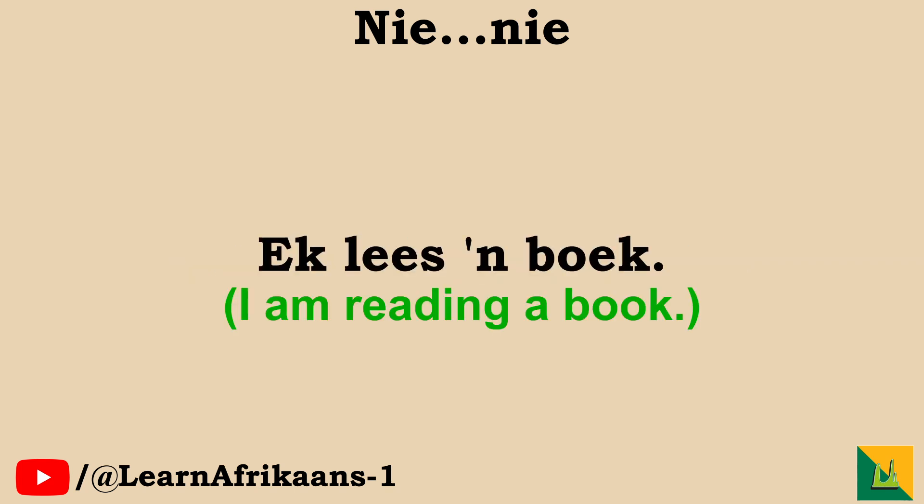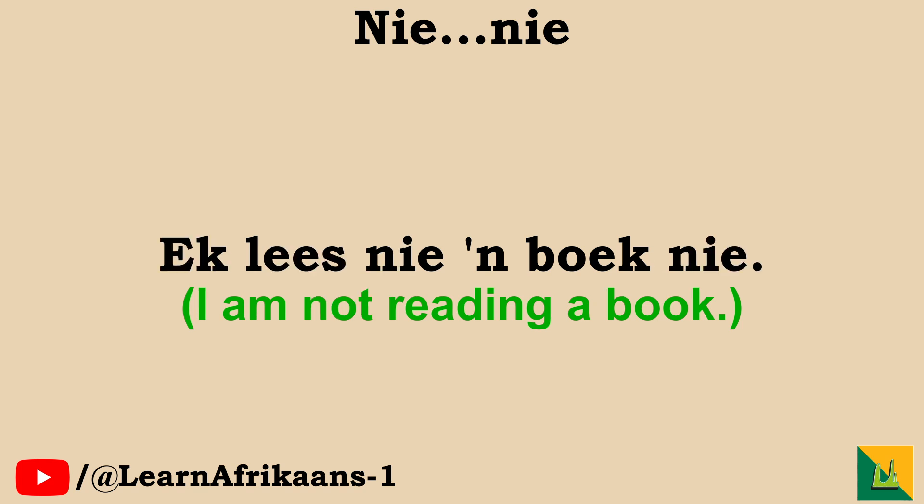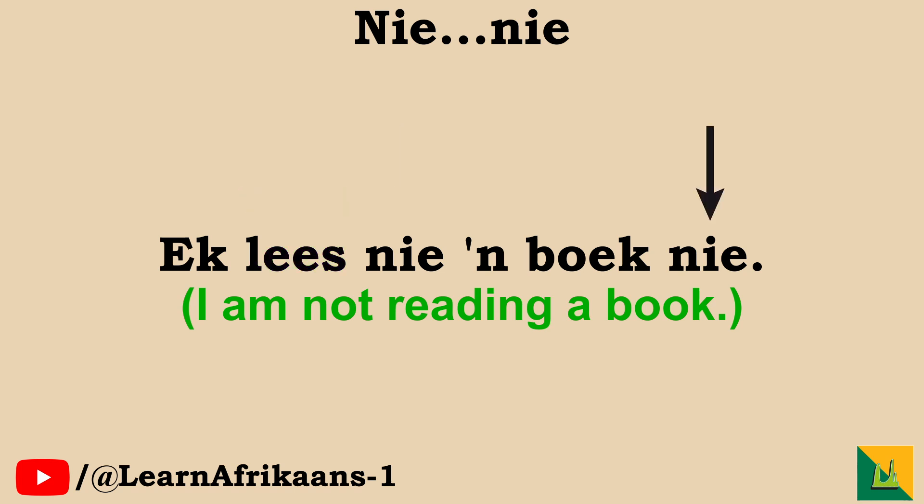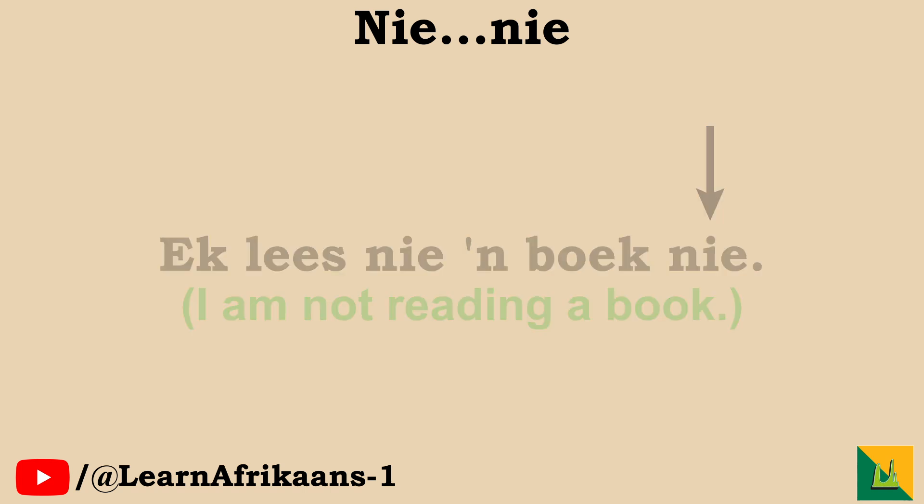Let's do another example. Ek lees 'n boek. Ek lees nie 'n boek nie. For the double negative, the first nie will come after the verb. The second nie comes at the end of the sentence. If you have a complex sentence, the second nie will come before the second clause.